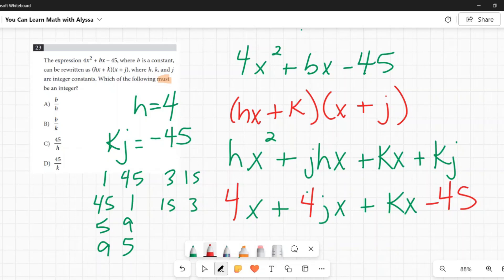Let's look at our options. Which of the following must be an integer? B divided by h? The only way that this must be an integer is if b were equal to 4 times an integer. We have no way of knowing that. We know that b is equal to 4j plus k. How do I know that that's divisible by 4? I don't. In fact, it's pretty unlikely that it's divisible by 4, looking at what j and k could be. If I plugged in 15 or negative 15 for j and 3 for k, I'm getting an odd number. So already I can tell just with one example, this must not be true. A is out.